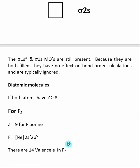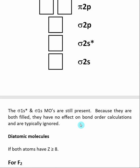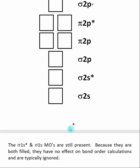When looking at diatomic molecules, if both atoms have a Z value greater than or equal to 8, we will use one particular molecular orbital diagram. This molecular orbital diagram will change when we use atoms with smaller Z values. The first example we will look at is F2. The Z value for fluorine is 9, so we will use the molecular orbital diagram shown here.